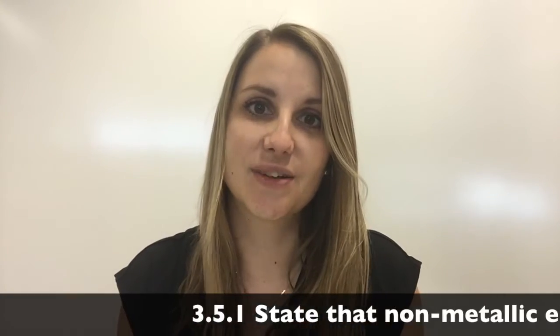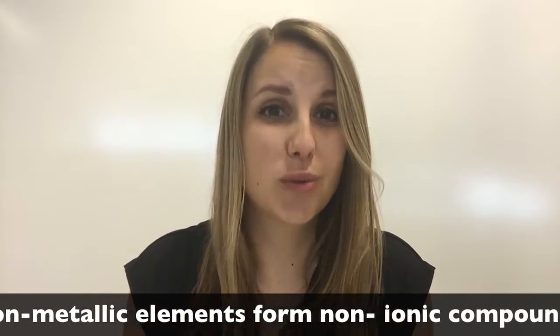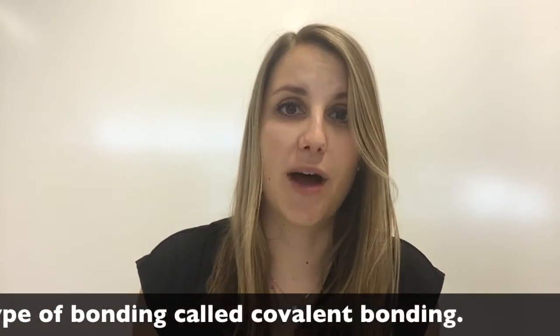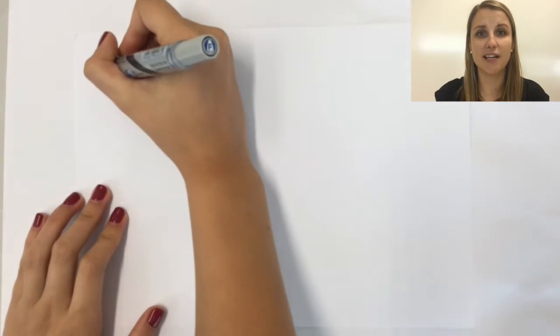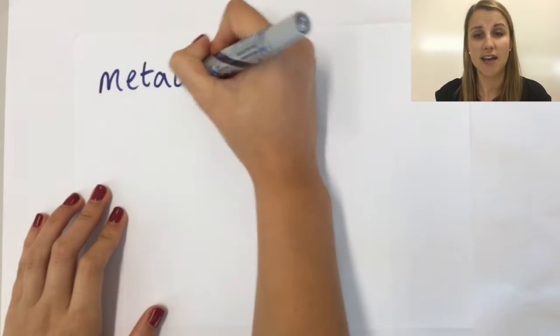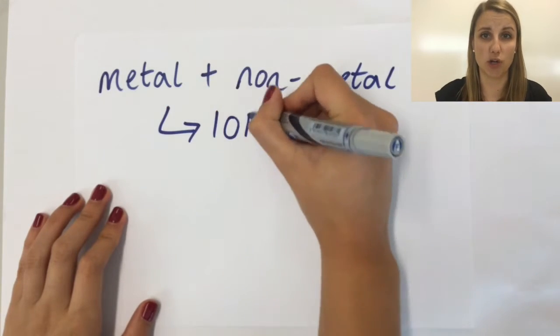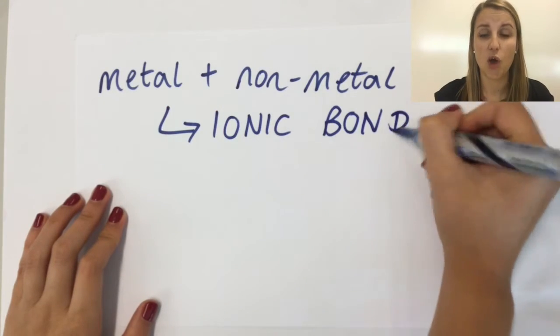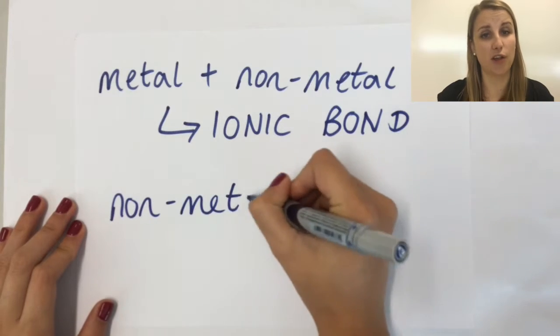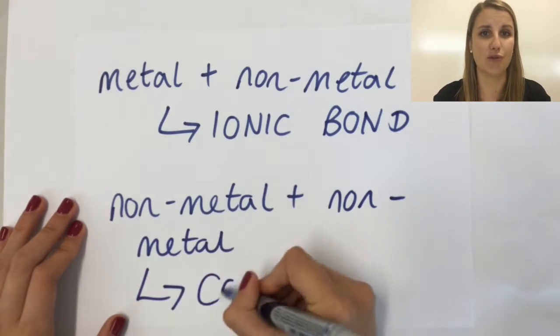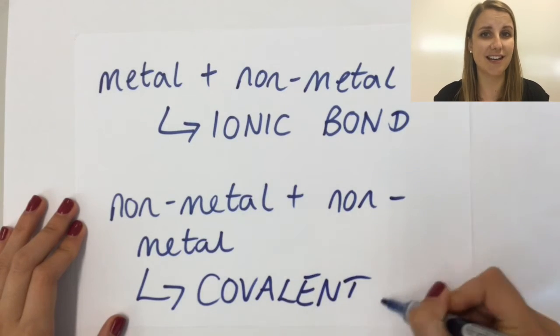Hi guys, this video is all about the types of bonds that non-metallic elements form with each other — so non-metal with non-metal — and we're going to talk about what a covalent bond is. When a metal bonds with a non-metal, that forms an ionic bond, which is what we talked about before. When a non-metal bonds with another non-metal, that forms a different type of bond called a covalent bond, and they work in a slightly different way.